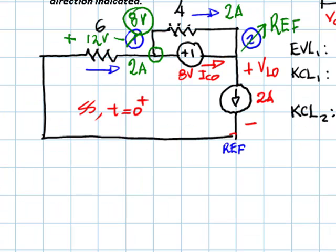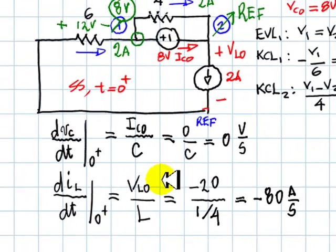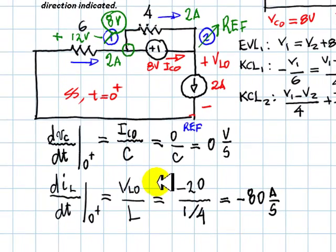But we would have found them much easier and much faster. Once we have those values, we compute dVc/dt at 0 plus as Ic0 divided by C. We found that Ic0 is 0, so dVc/dt at 0 plus is 0 volts per second. And dIl/dt at 0 plus is Vl0, negative 20 divided by L one-fourth of a Henry, that is negative 80 amps per second. And we have now some initial conditions.